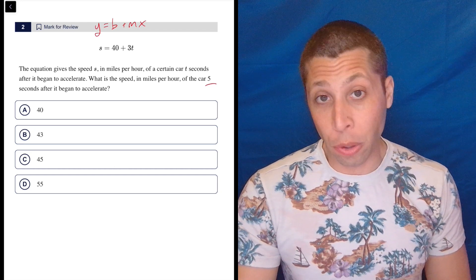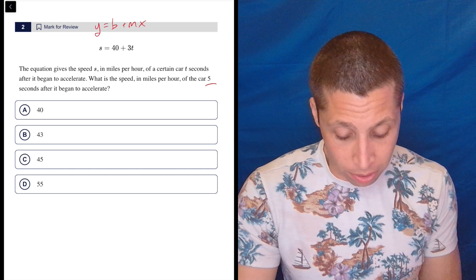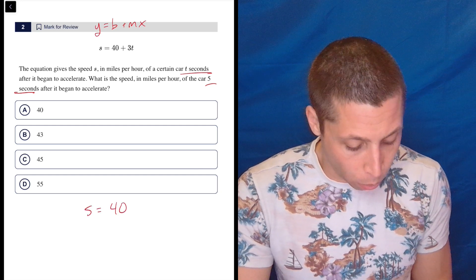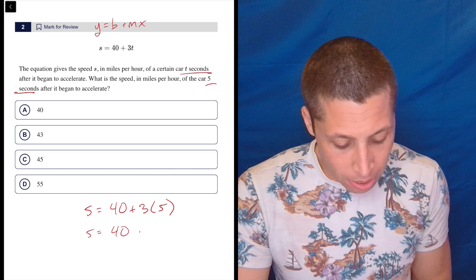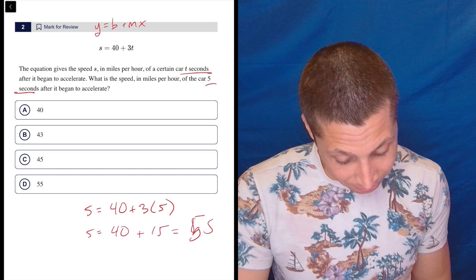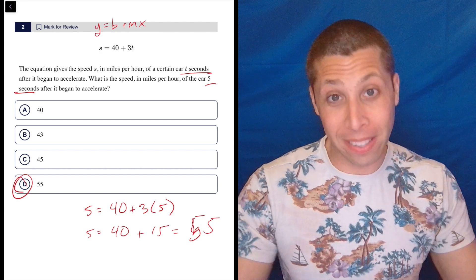So it has nothing to do with y equals mx plus b. This is purely just put things into the equation where they belong, right? So the number of seconds is t. This is going to be s equals 40 plus 3 times 5. S is equal to 40 plus 15, which is 55. Choice D. Careful with your arithmetic, but there you go. That's it.